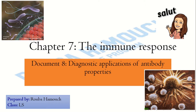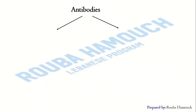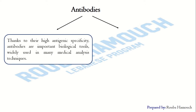Today we will be explaining document 8: diagnostic applications of antibody properties — the last document in this chapter for LS students in the Lebanese program. Antibodies are produced by plasmocytes and are produced against a wide variety of biological molecules such as antigens, which are proteins or complex carbohydrates. Antibodies have a remarkable specificity, being able to distinguish among closely related molecules.